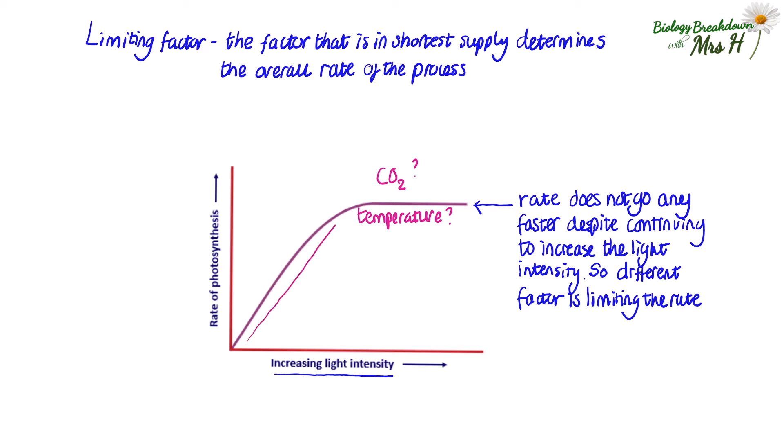What is limiting the rate at this part of the graph? Well, as this rate is increasing due to light intensity, then at this point of the graph, the light intensity is the limiting factor. If you get this question in an exam, they may put a different factor on the x-axis, so make sure you check for that.